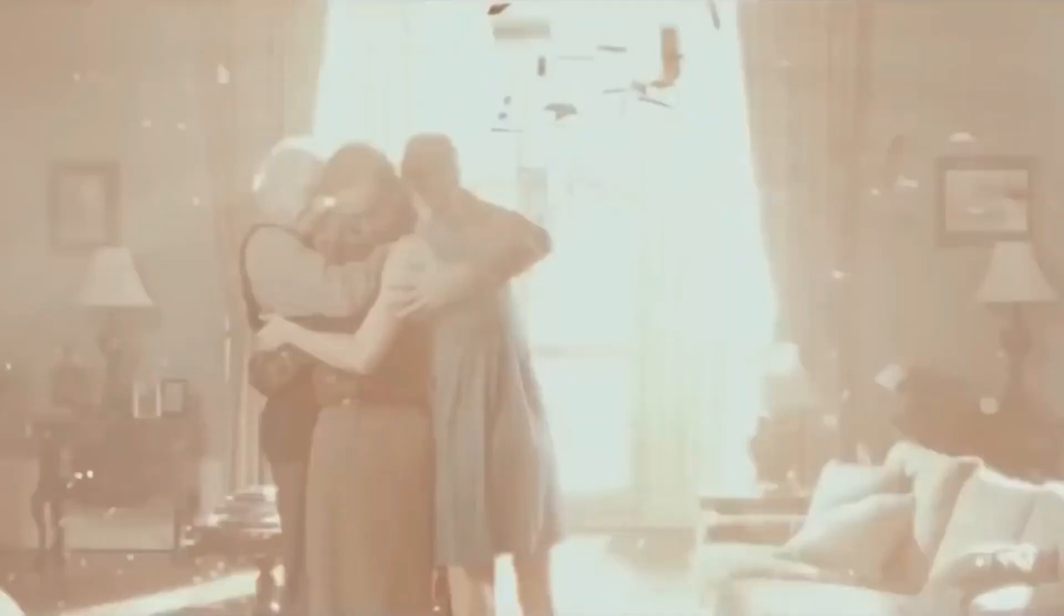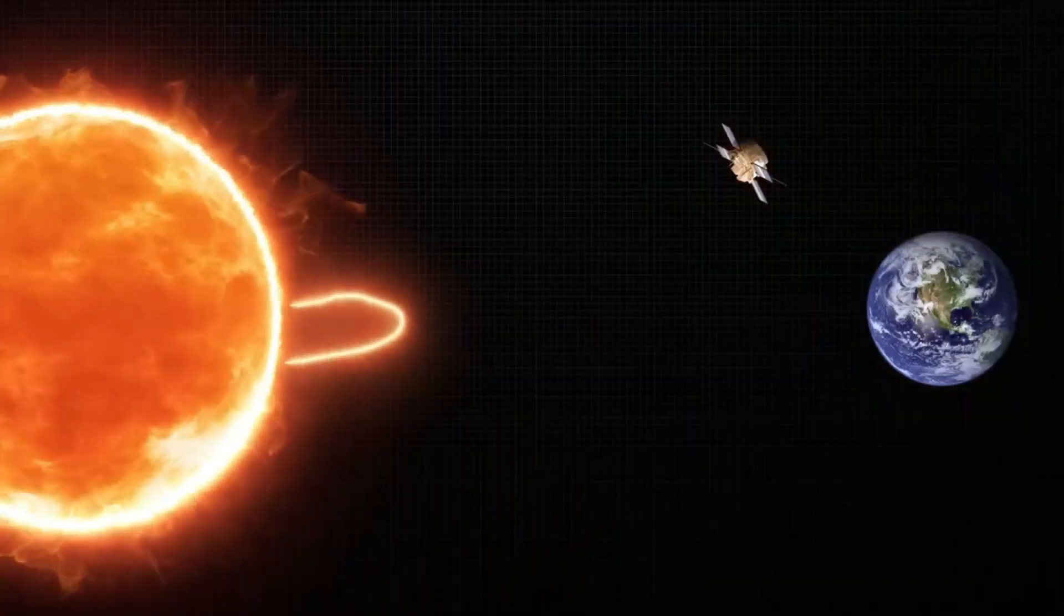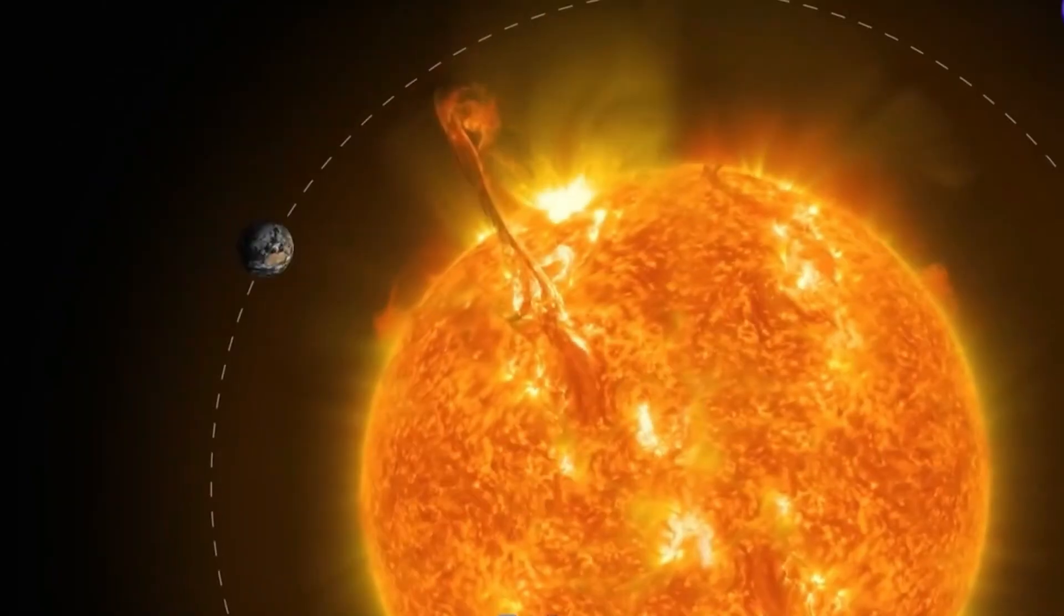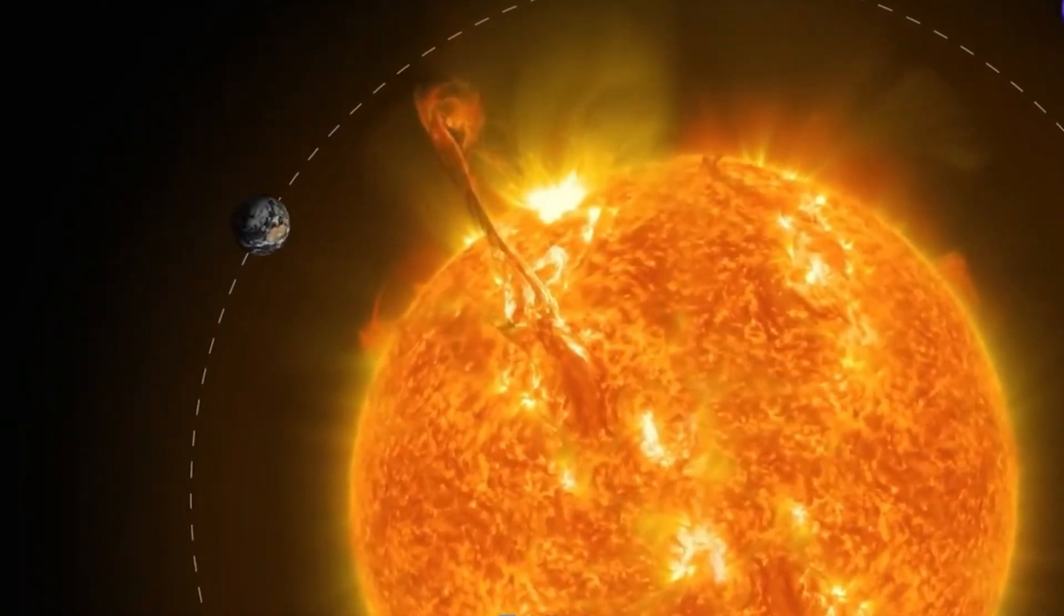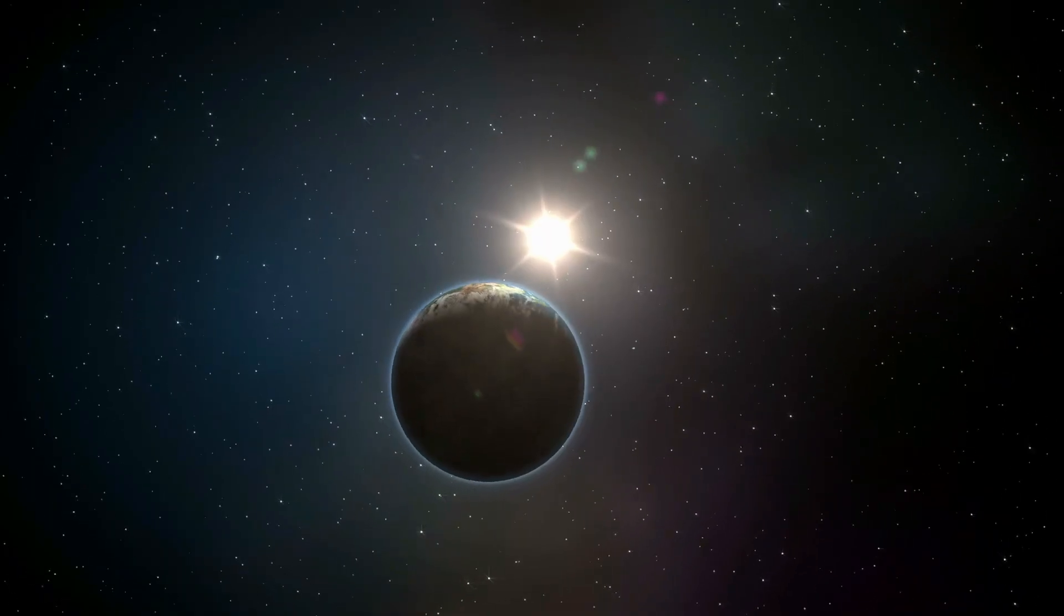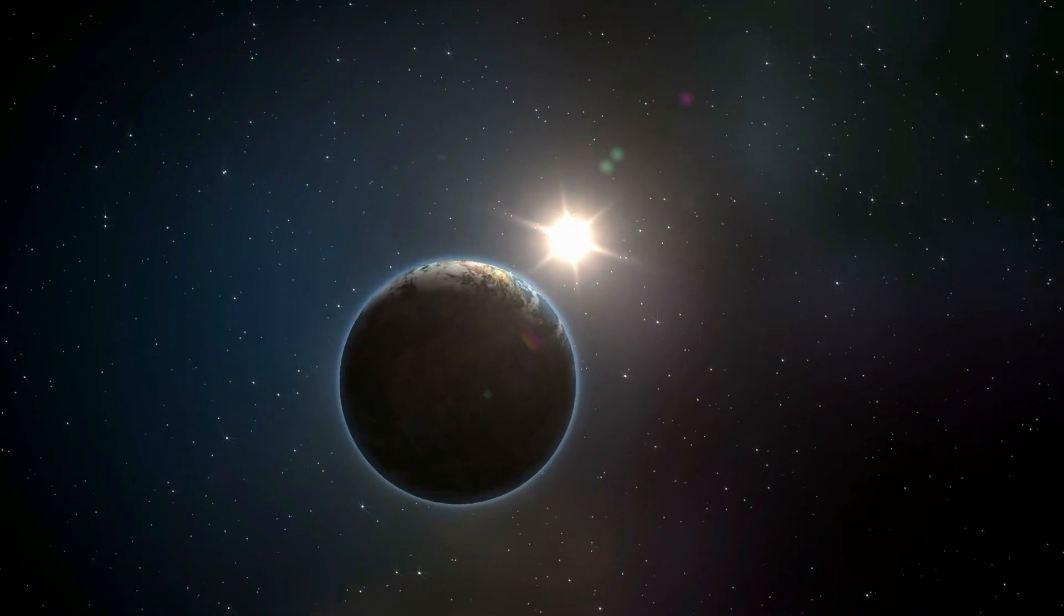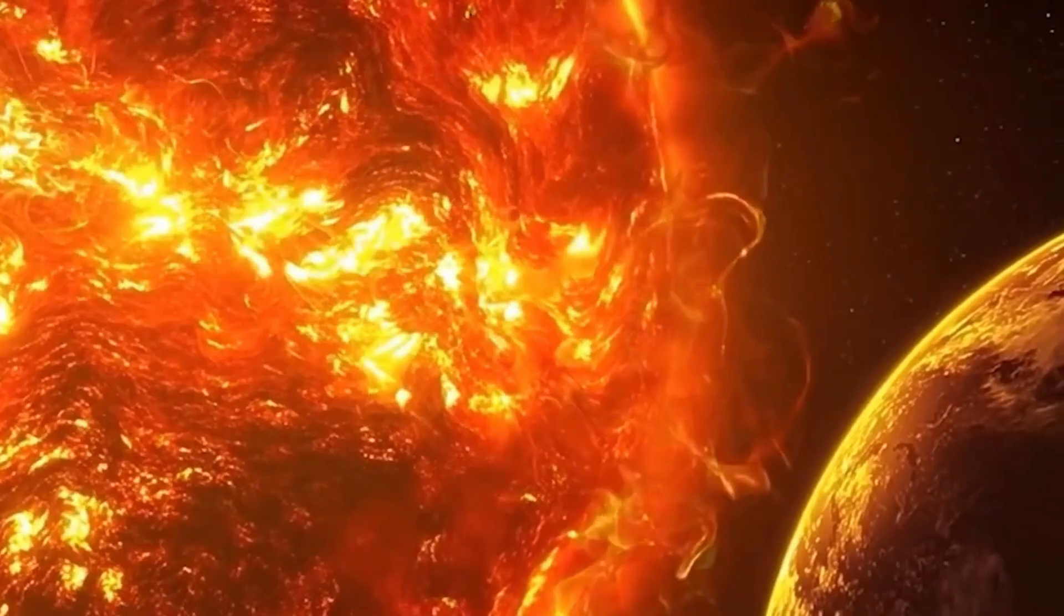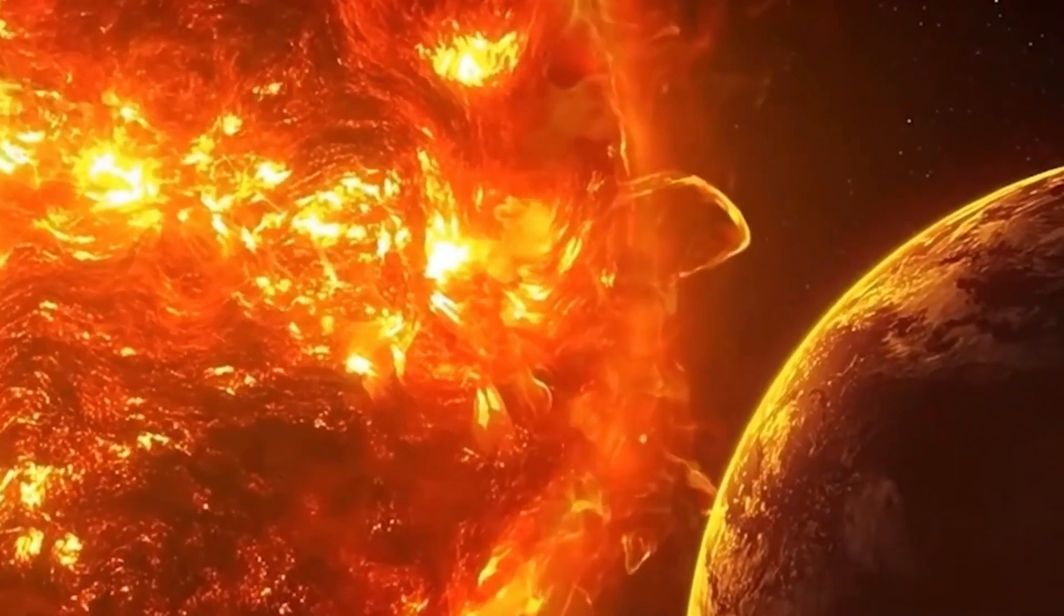Imagine the sun's surface, roiling and tumultuous, marked by dark spots known as sunspots. These are not mere blemishes but rather windows into the sun's magnetic soul, areas where the magnetic fields twist and turn with intense complexity. It is here, in these turbulent zones, that solar flares are born.